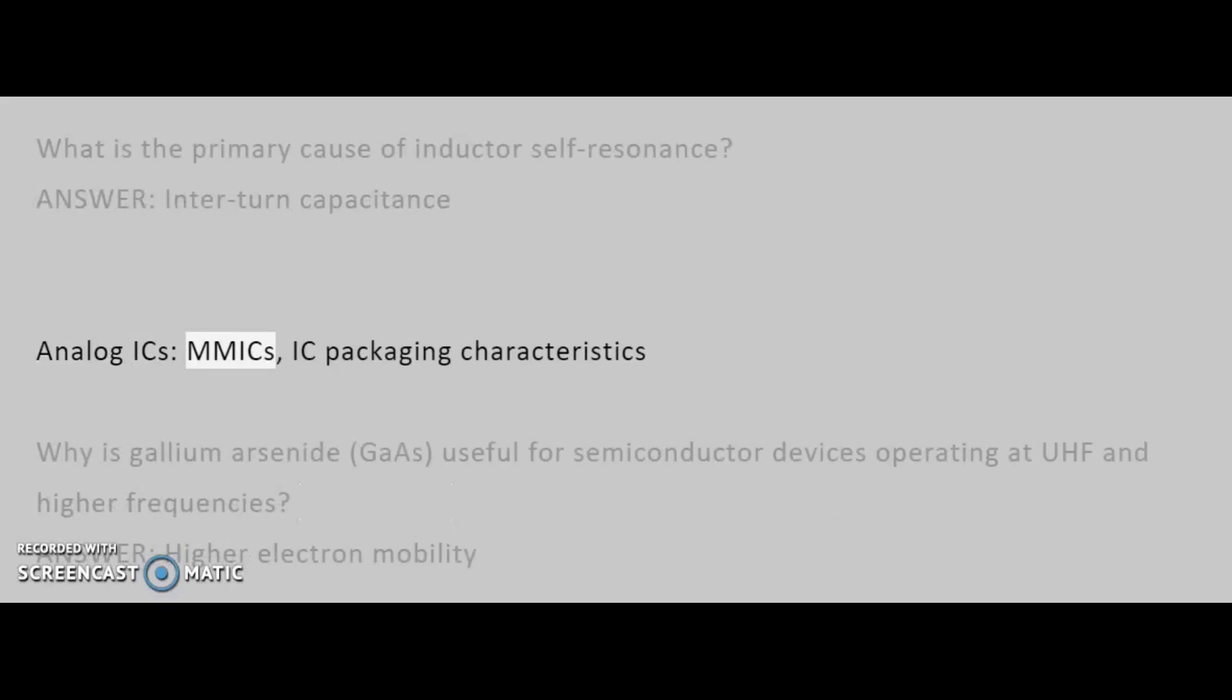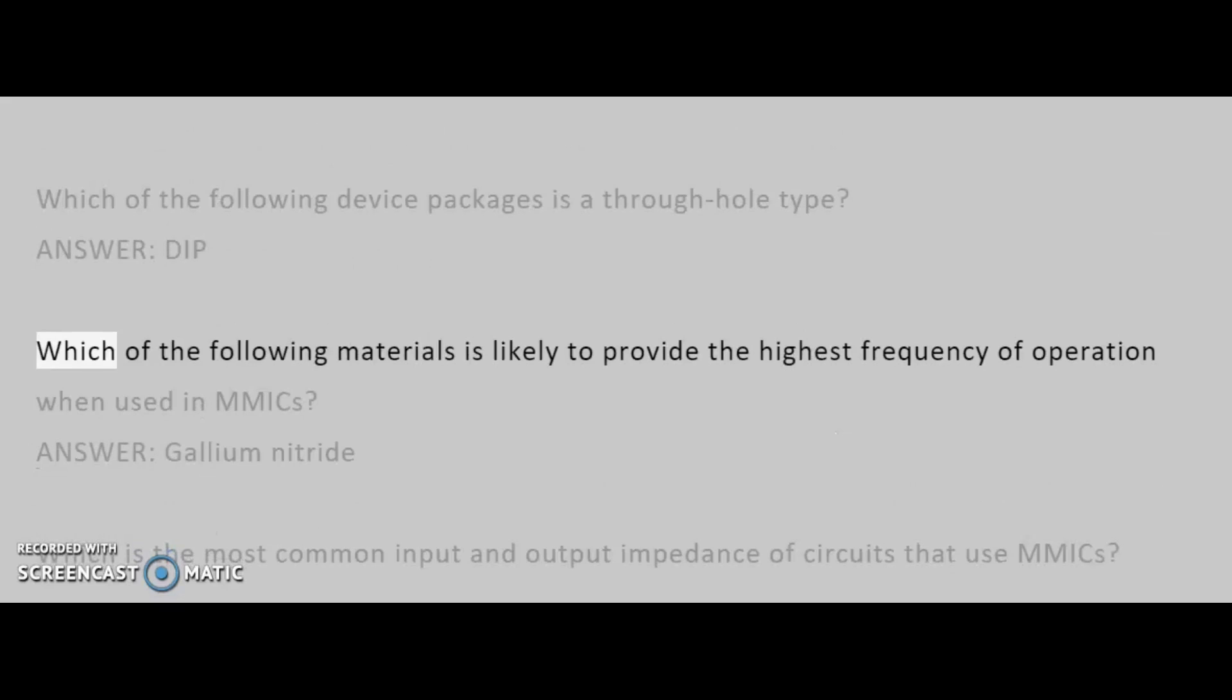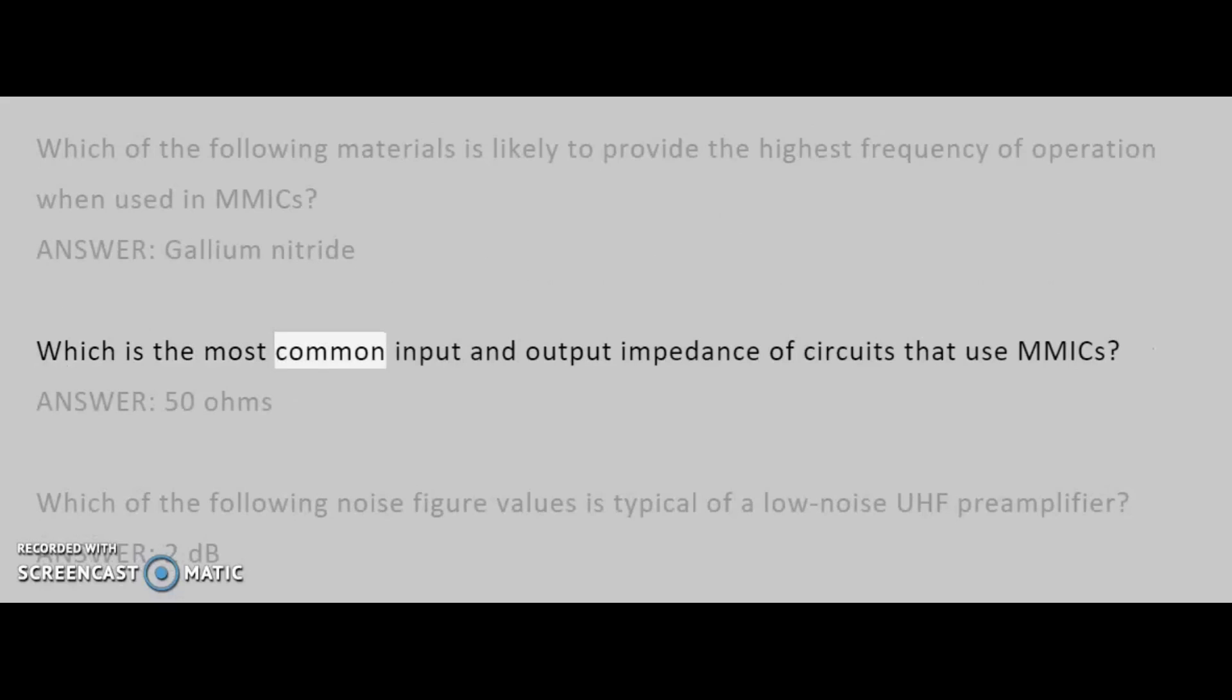Analog ICs, mics, IC packaging characteristics. Why is gallium arsenide, GAAS, useful for semiconductor devices operating at UHF and higher frequencies? Answer: higher electron mobility. Which of the following device packages is a through-hole type? Answer: dip. Which of the following materials is likely to provide the highest frequency of operation when used in mics? Answer: gallium nitride. Which is the most common input and output impedance of circuits that use mics? Answer: 50 ohms.